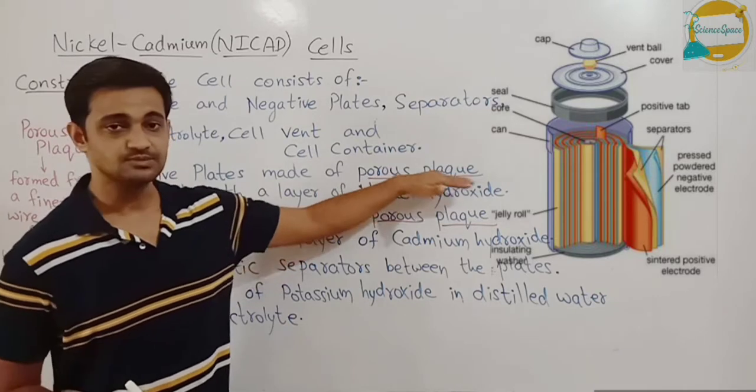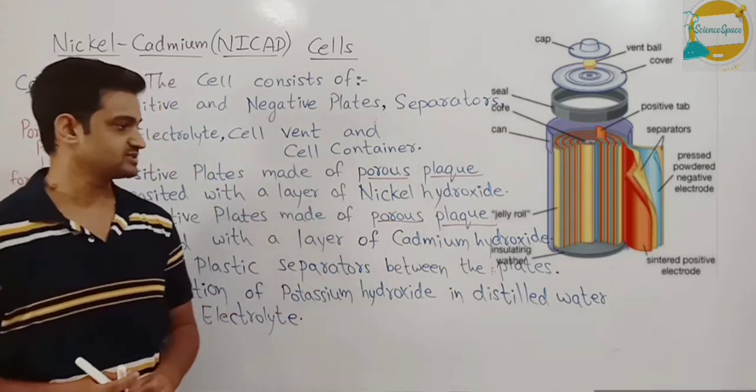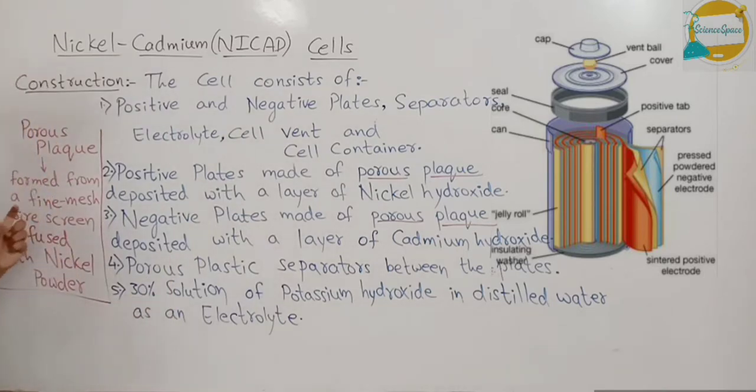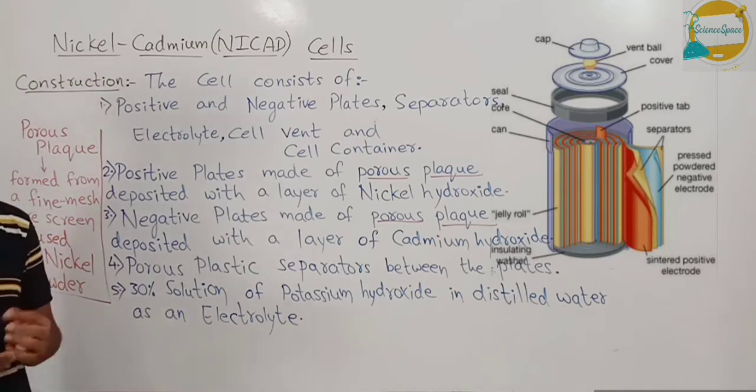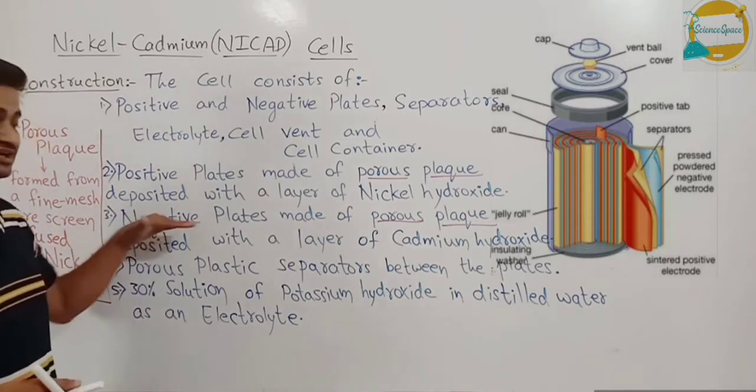And then the next part is the positive plates are made up of porous plate deposited with a layer of Nickel hydroxide. This porous plate is formed from a fine mesh wire screen. A fine mesh wire screen is taken which is then fused with Nickel powder.